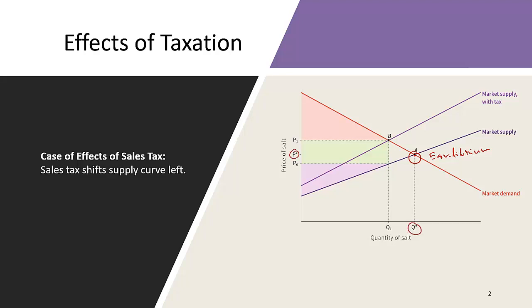The initial market equilibrium has price set at P* and quantity Q*. P* and Q* are the equilibrium price and quantity when there is no taxation. When the government imposes the sales tax, the market supply curve shifts left because there's a cost on the sellers to pay that tax. Though sellers try to collect that tax from buyers, the price that sellers get to keep is not the actual price — they have to give a part of it to the government.